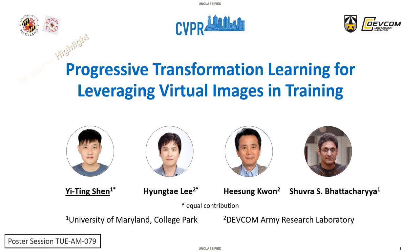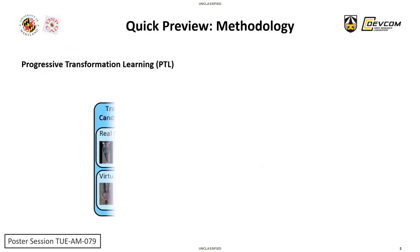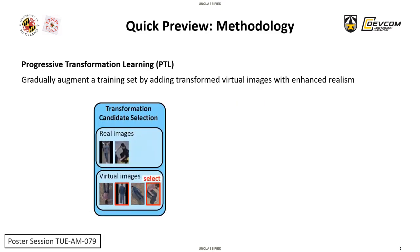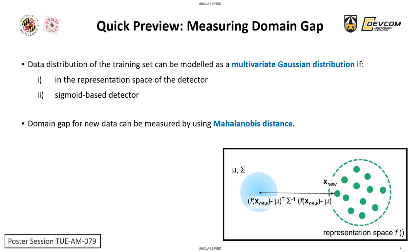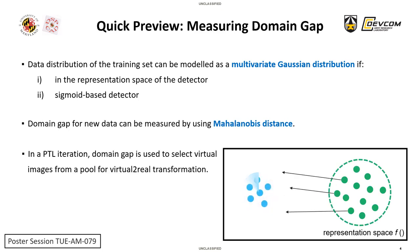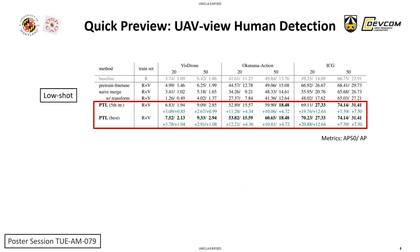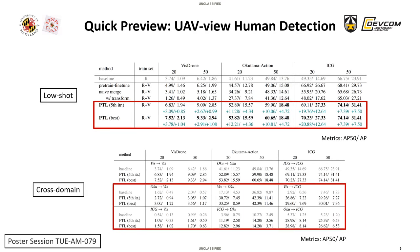Hi everyone, I'm Yi Ting Shen. This is the presentation for our paper, Progressive Transformation Learning for Leveraging Virtual Images in Training. We propose PTL, a new training scheme that iteratively increments the training set by adding transformed virtual images with enhanced realism. We show that the data distribution of the training set can be modeled as a multi-variate Gaussian distribution in the representation space of the sigmoid-based detector, and therefore the domain gap for new data can be measured by the Mahalanobis distance. In PTL, the domain gap is used to select the subset of virtual images for virtual-to-real transformation. We demonstrate that PTL outperforms baseline methods in terms of low-shot and cross-domain detection accuracy on three UAV human detection benchmarks.